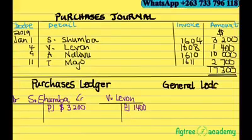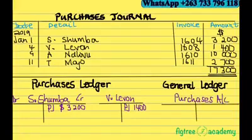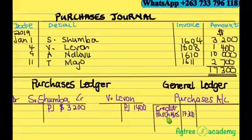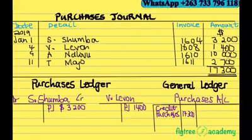In the general ledger, I will just post the total in the Purchases account to the debit side. I will write 'credit purchases — 17,300' on the debit side of the general ledger. This is the double entry system for the Purchases Journal.